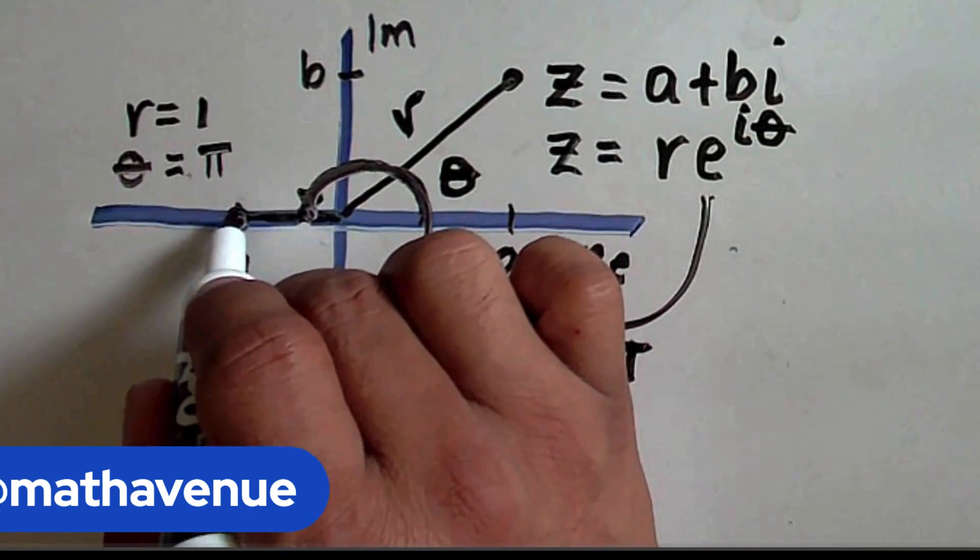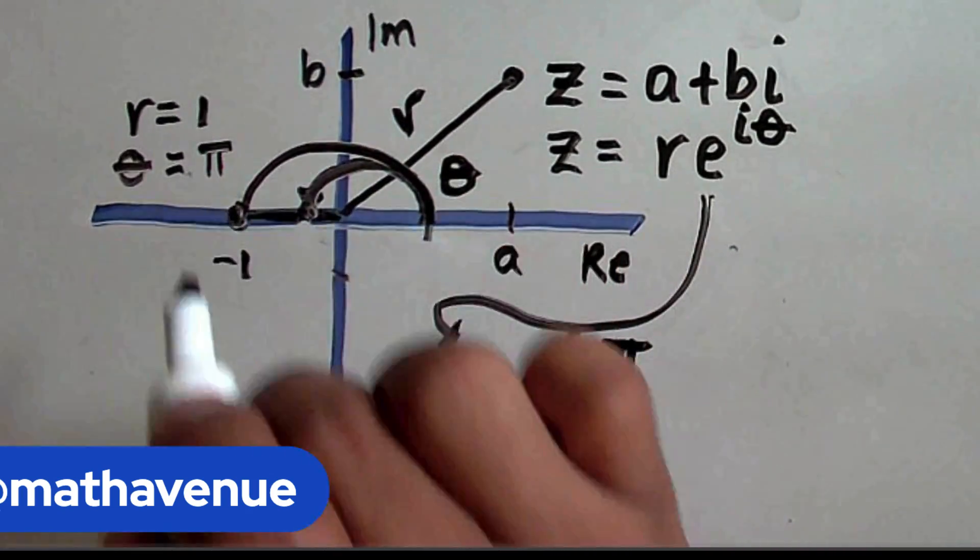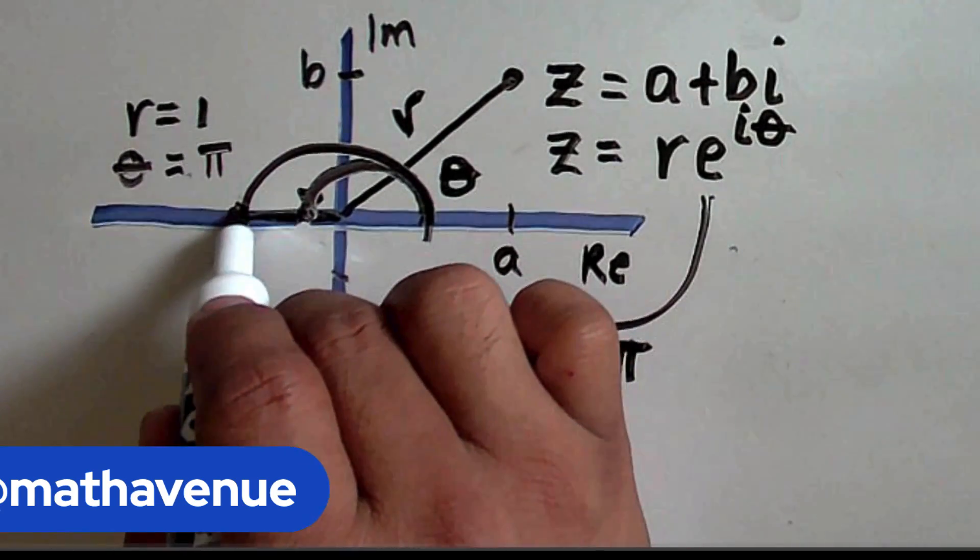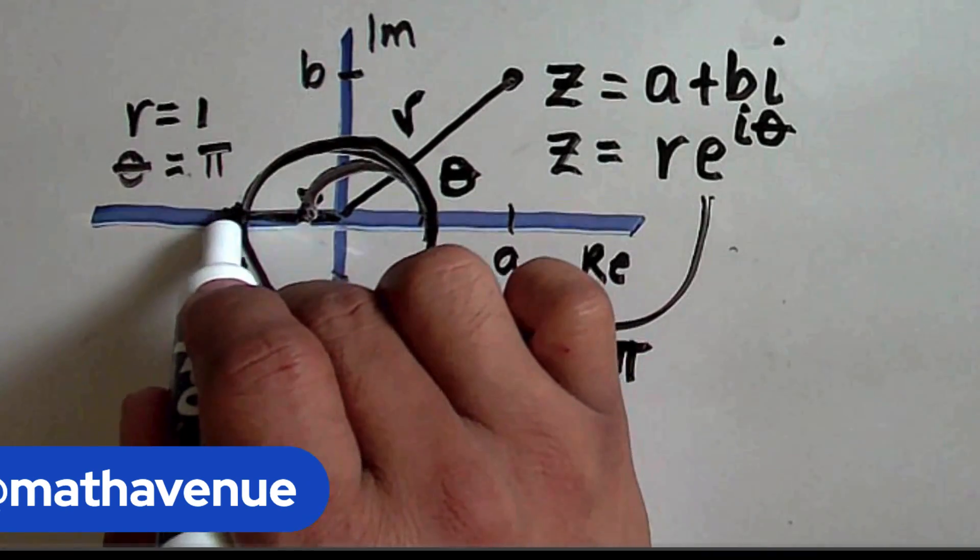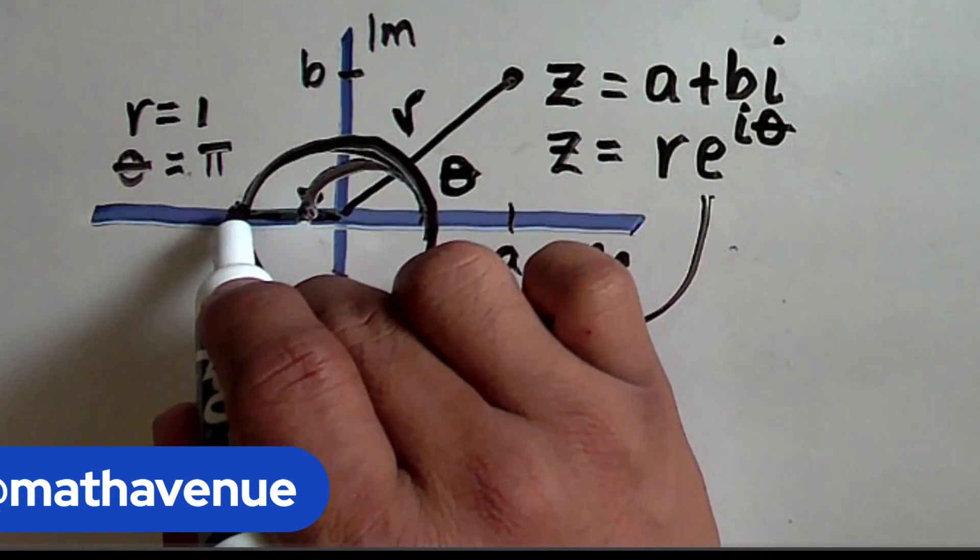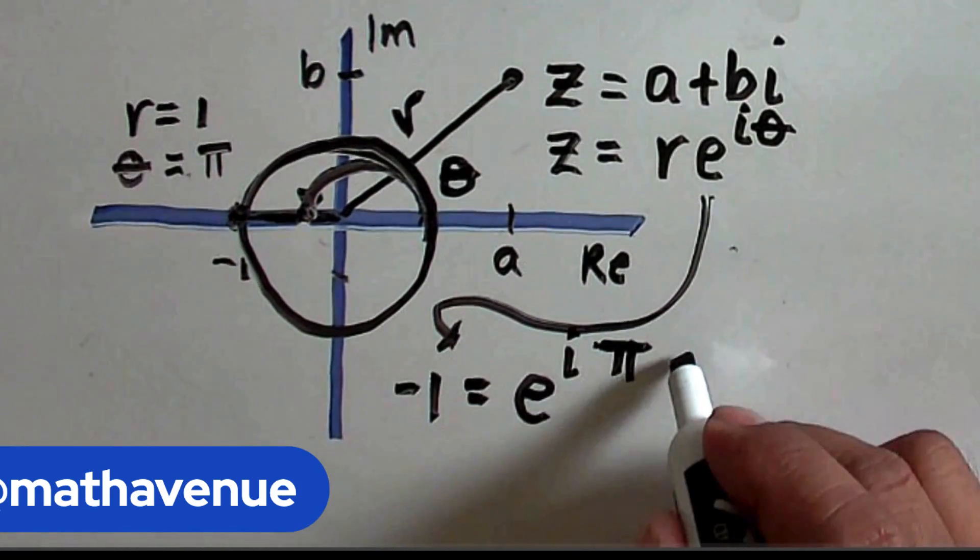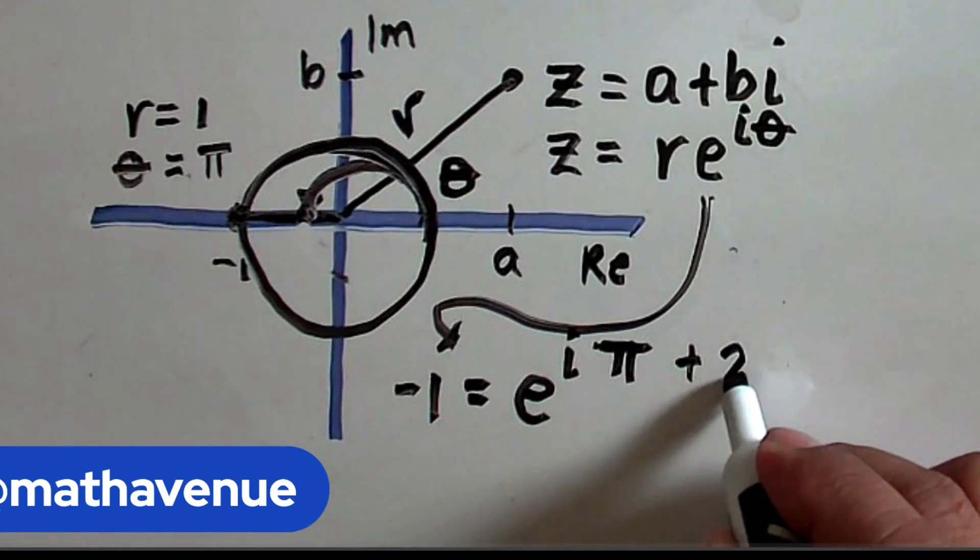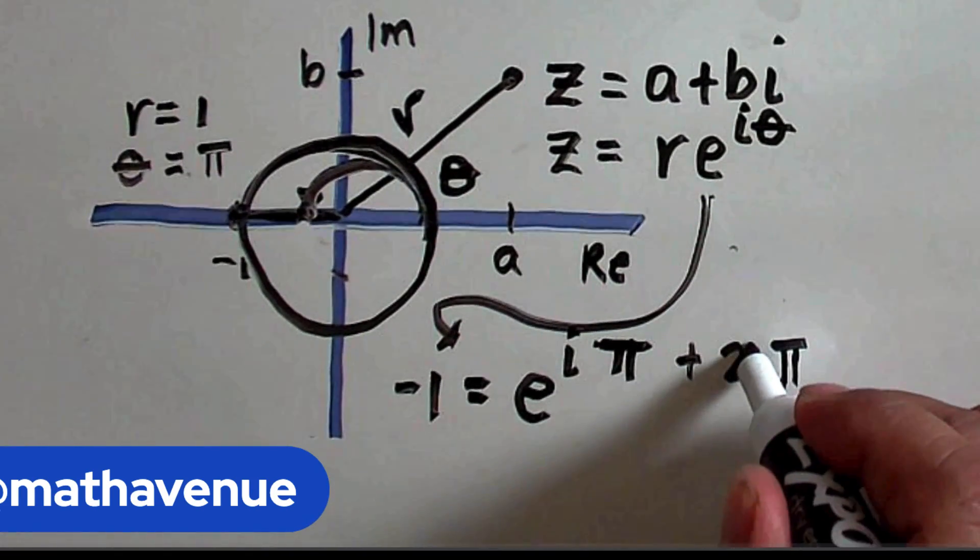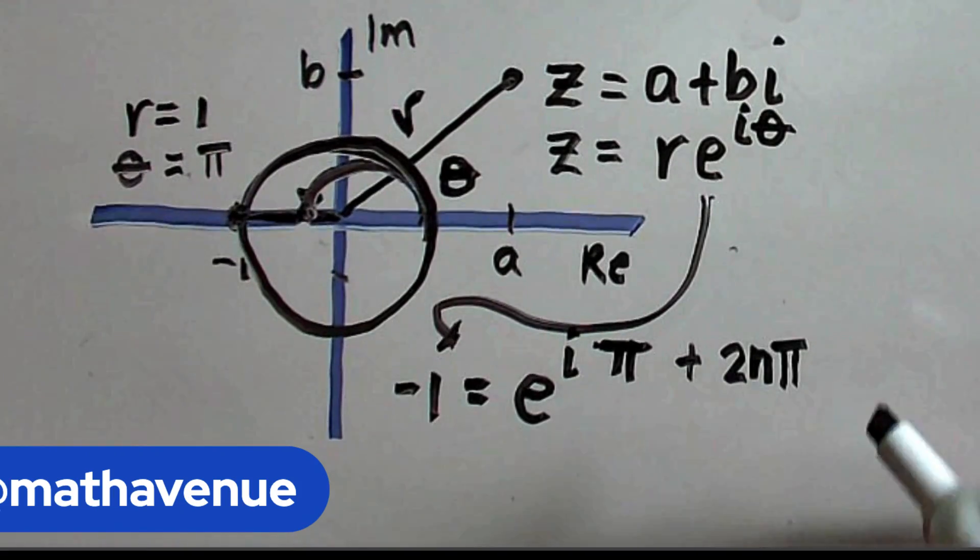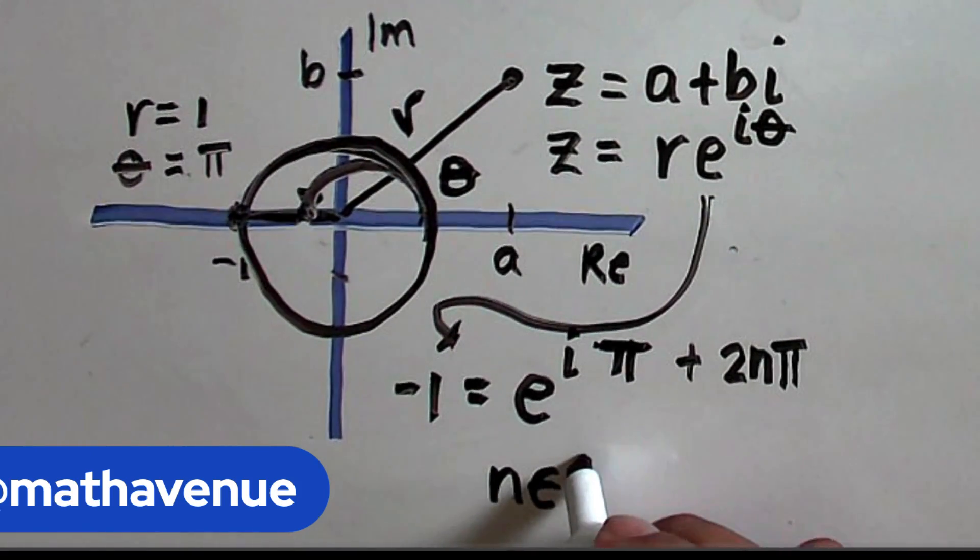Now, notice that to arrive at this point, I rotated π. But if I rotate another 2π, I will end up at the same point, and every time I rotate 2π, I will keep arriving at the same point. In other words, if I add multiples of 2π, the way to write multiples of 2π is you multiply it by a certain integer n. So, here, n is an element of the set of integers.